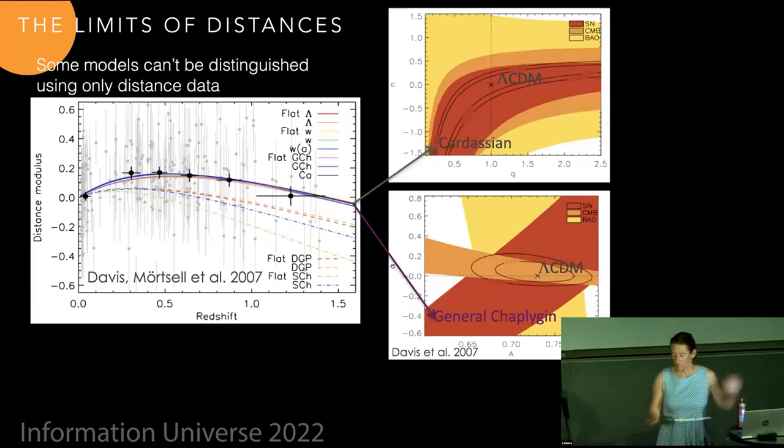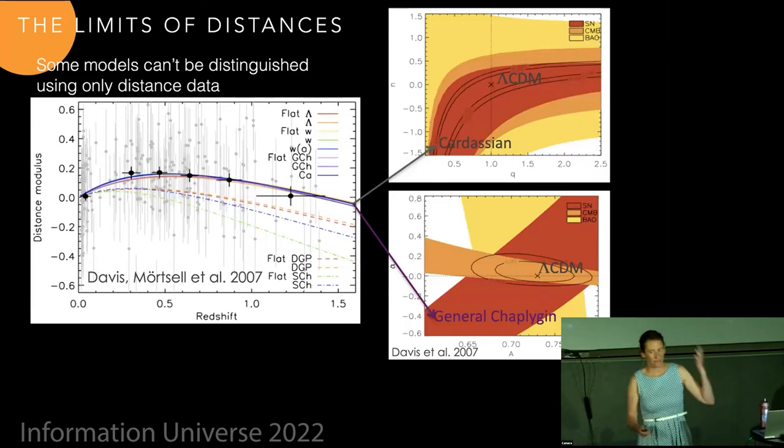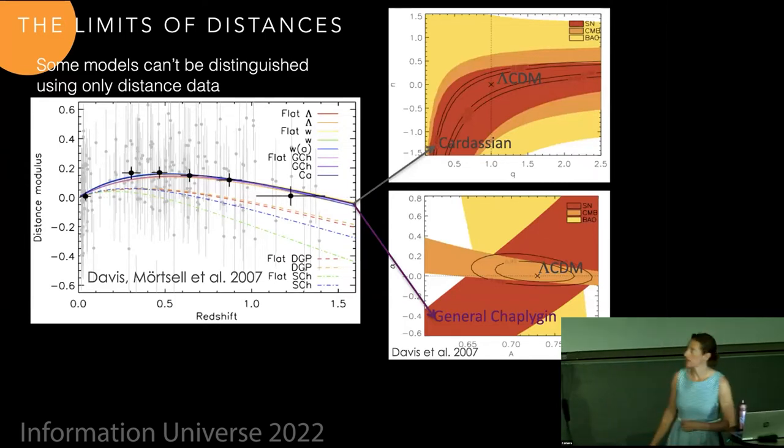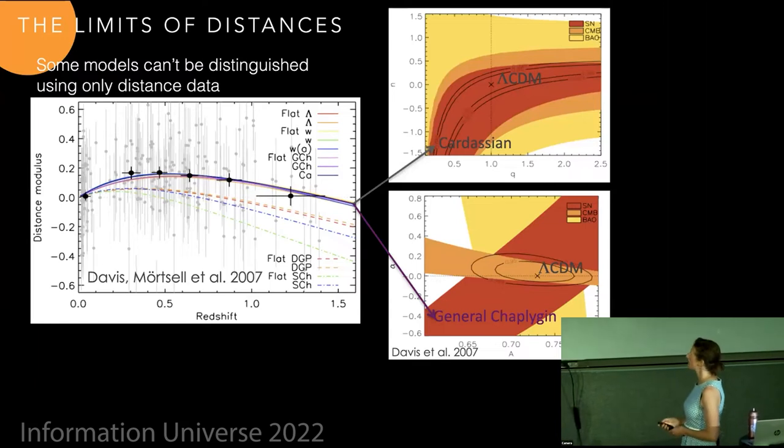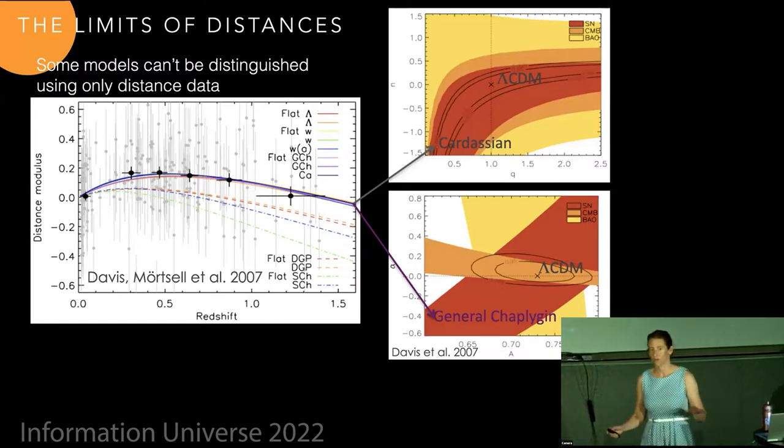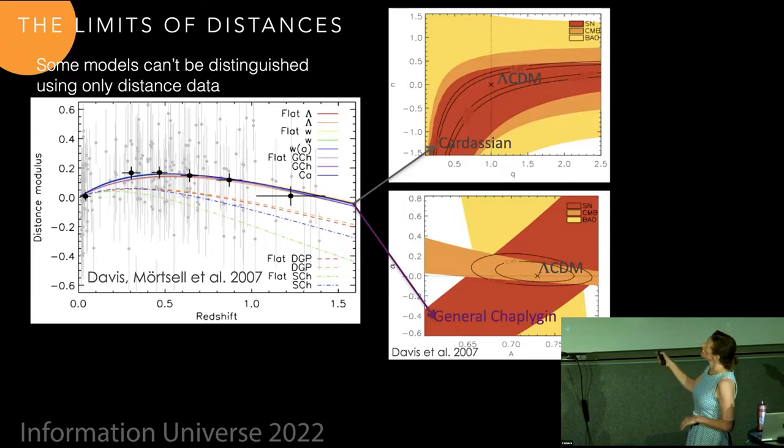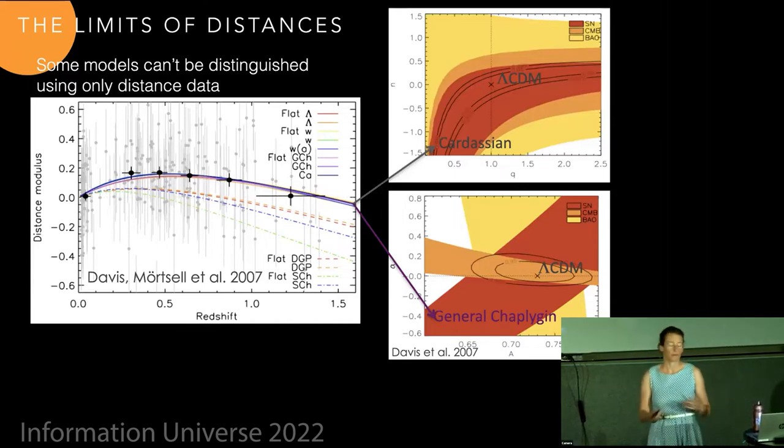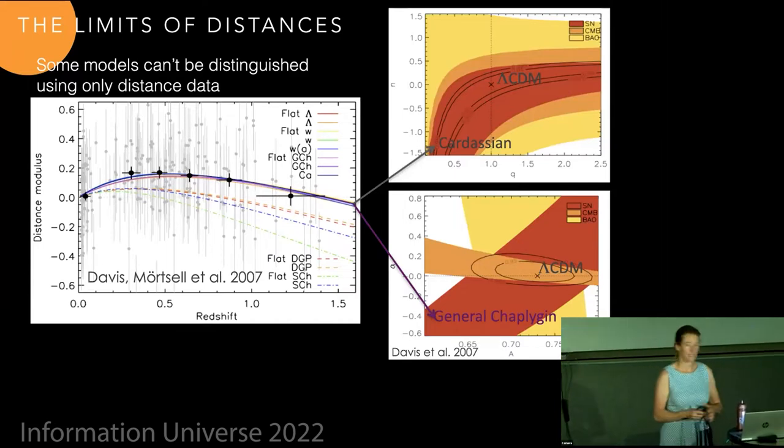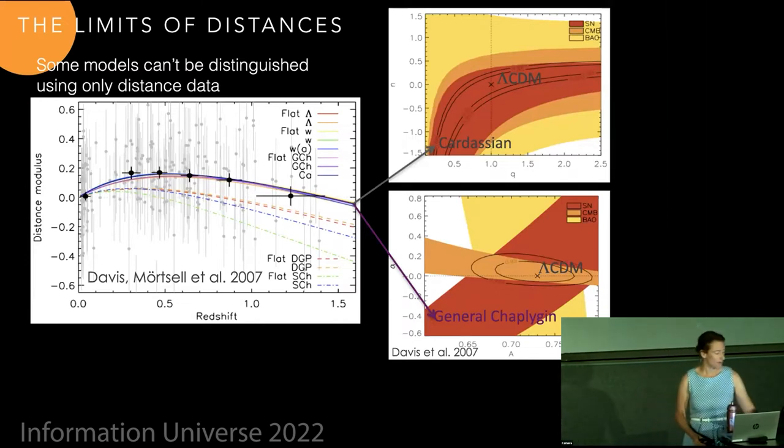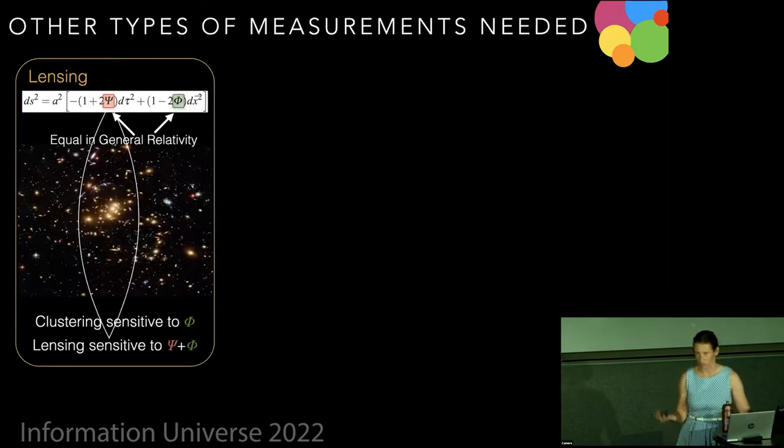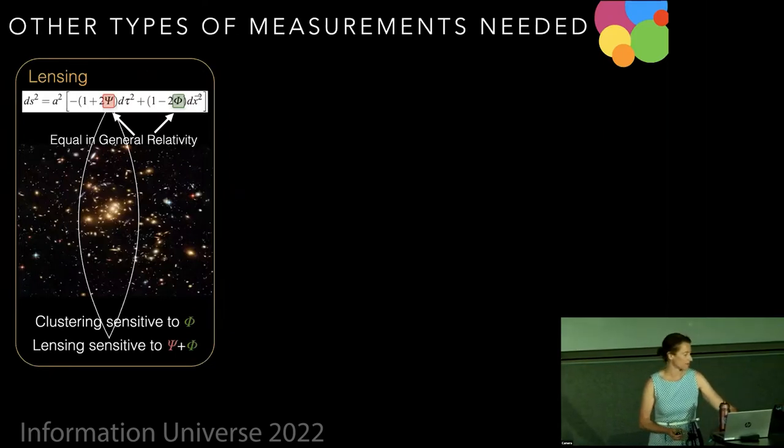But then there's also another type of measurement that's also a ruler, which is the time delay measurements of lensing where you have lensing time delays. And that effectively also is divided by 1 plus z. And I should have mentioned that the standard candles tend to have, well, the supernovae have high H naught. The rulers tend to have low H naught, but this one has a high H naught and is a ruler. So that sort of breaks that nice pattern that I was looking at.